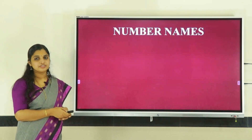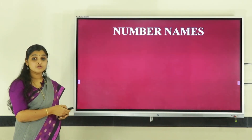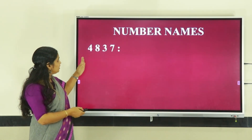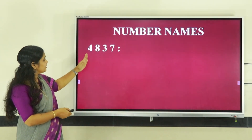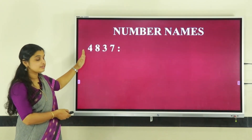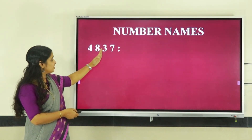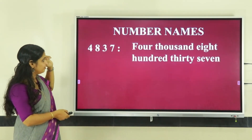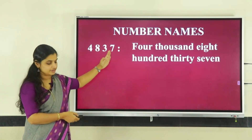All of us have names; like that, numbers also have names. How can you name the number 4, 8, 3, 7? Four is in the thousands place, eight is in the hundreds place, three is in the tens place, and seven is in the ones place. So the number is four thousand eight hundred thirty-seven.